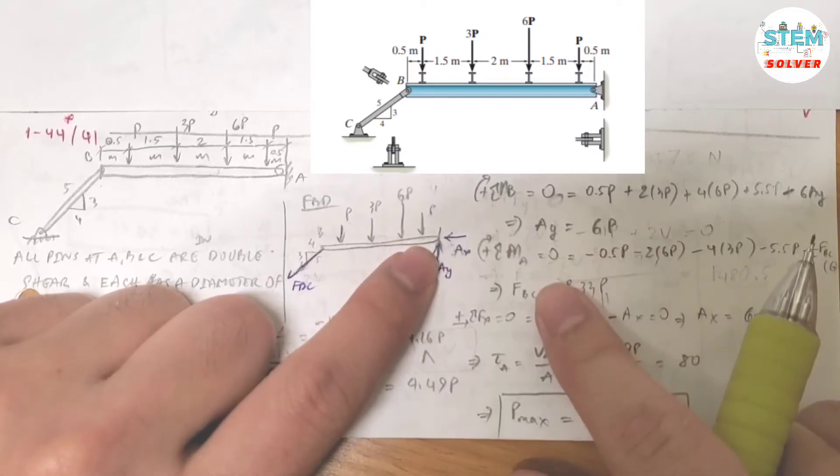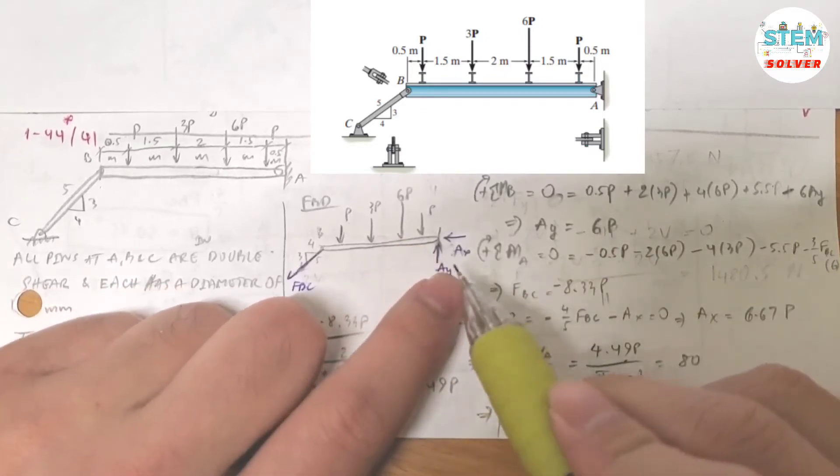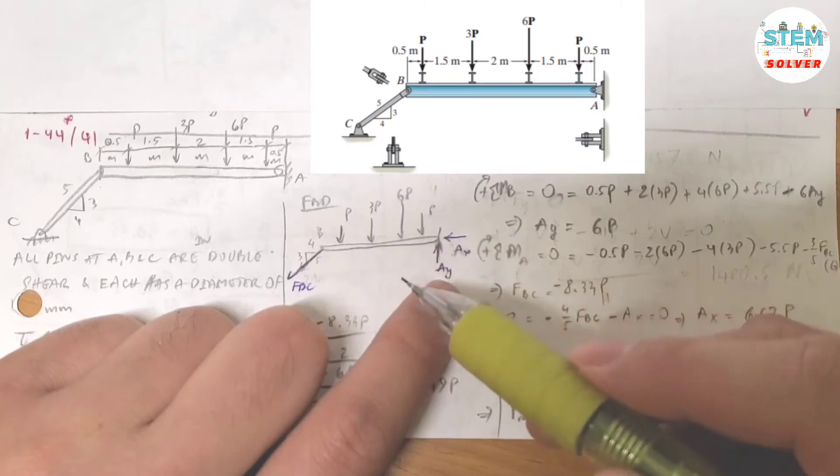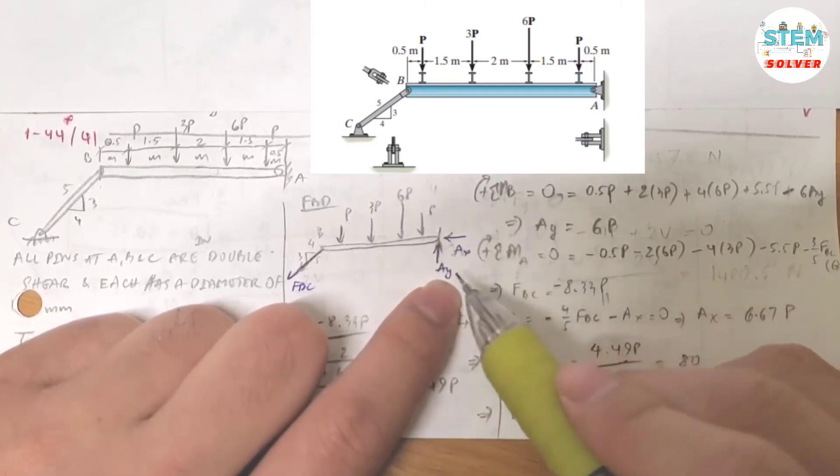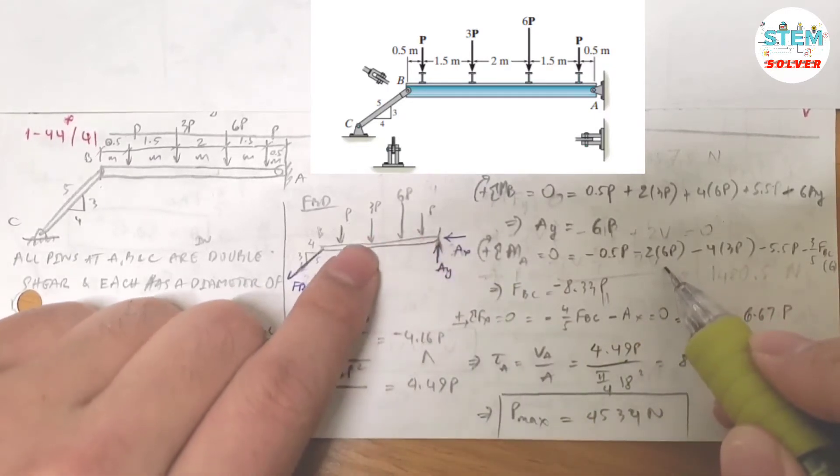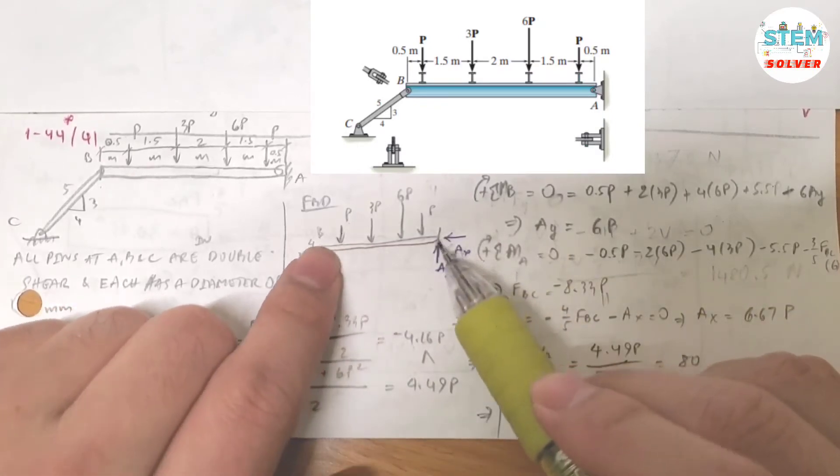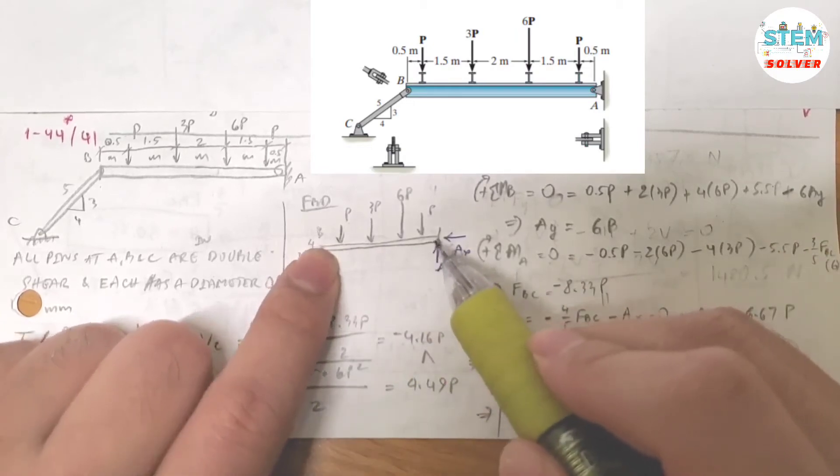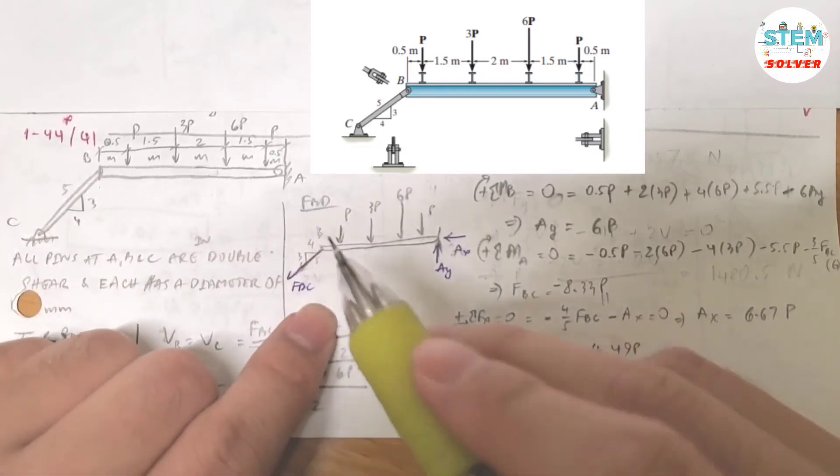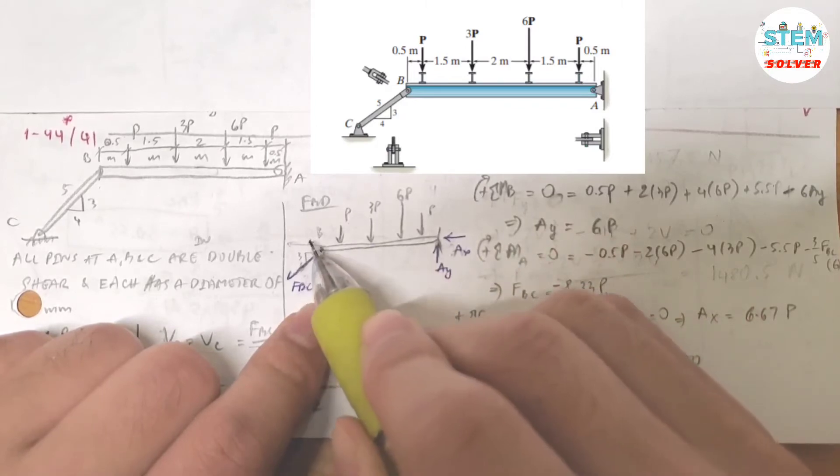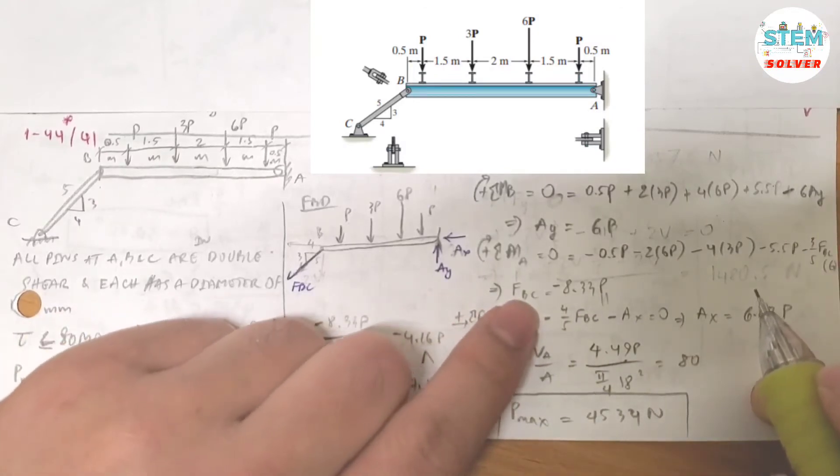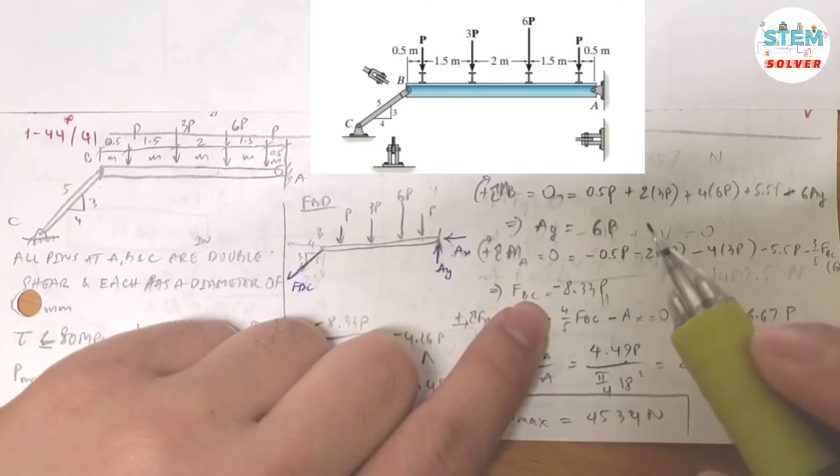Now take the moment about A and set it equal to 0. All of the P forces are in counterclockwise, so they are negatives. From here to here I have negative 0.5P, from here to here negative 2 times 6P, from here to here negative 4 times 3P, from here to here negative 5.5P, and from here to here I have 6 times, you break this out into X and Y components, so I have 3 over 5 times FBC. Now I can find FBC which is equal to negative 8.33P.